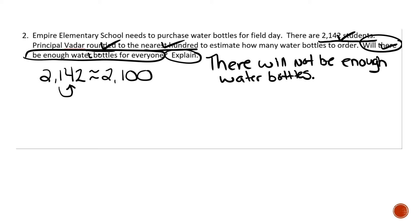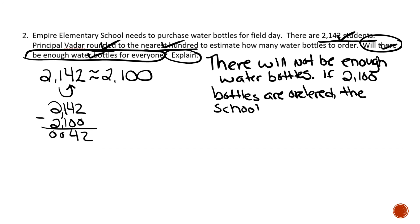I answered that question. I still have to explain, how do I know there won't be enough water bottles? If there's 2,142 students and 2,100 bottles ordered, the school will be short 42 water bottles. That's my next sentence, if 2,100 bottles are ordered, the school will be 42 bottles short.